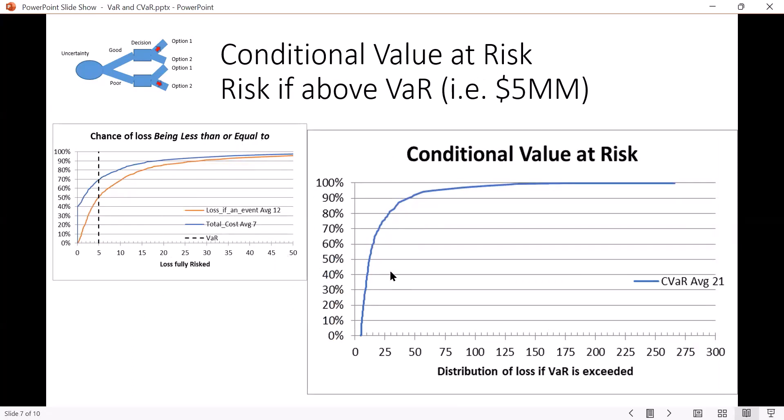So here's that chart again. And now what is the conditional value at risk? The conditional value at risk is the expected value of all this over here, which is shown to be 21.